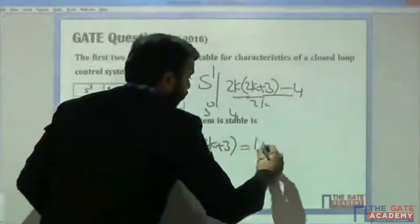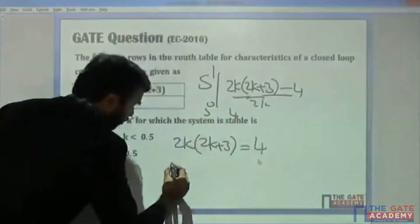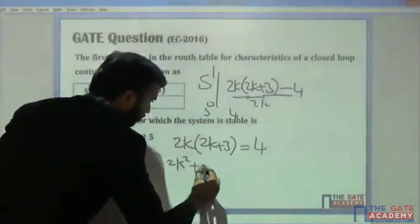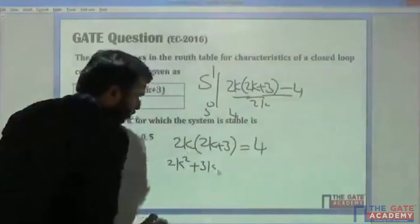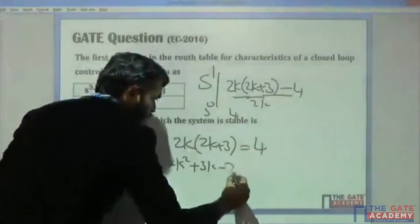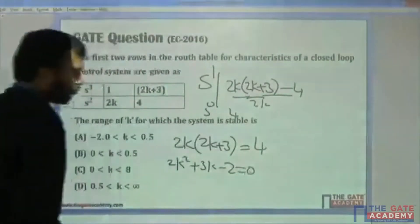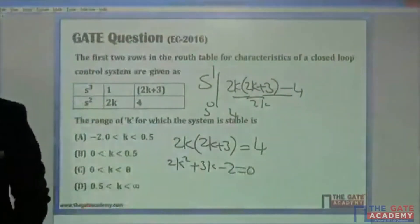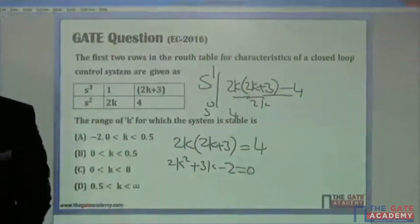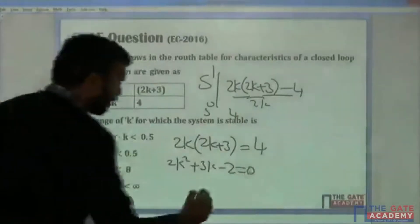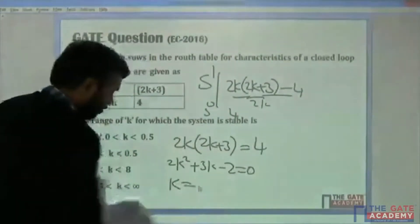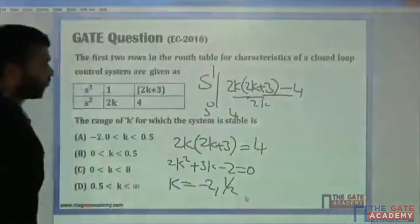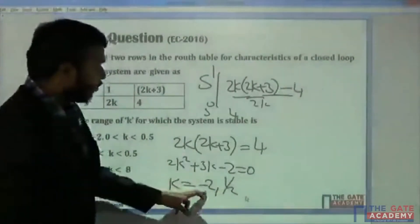Setting this equal to 4: 2k² + 3k - 2 = 0. Solving this equation, I get K = -2 or K = 1/2.